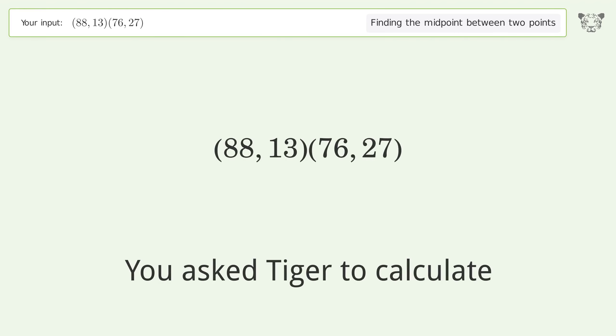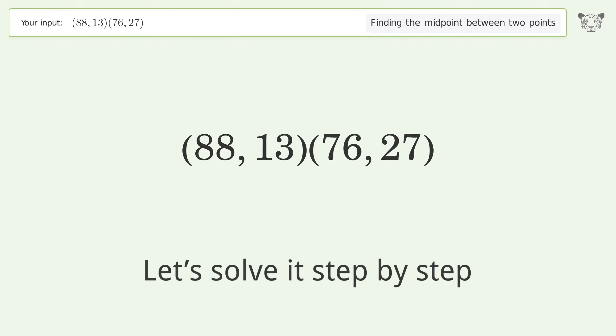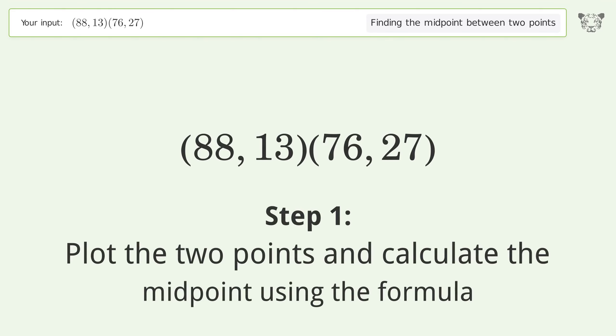Tiger Algebra will calculate the midpoint between two points. The midpoint between the two points is 82 comma 20. Let's solve it step by step: plot the two points and calculate the midpoint using the formula.